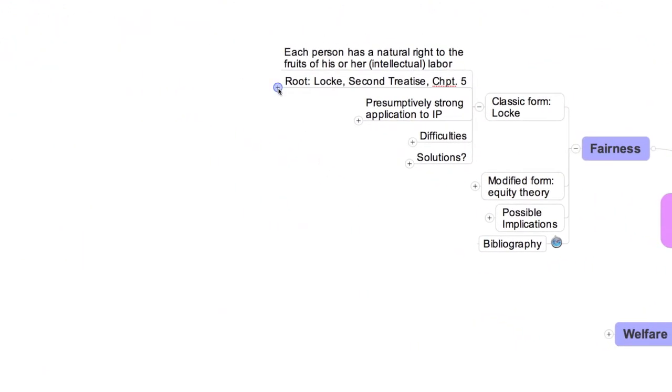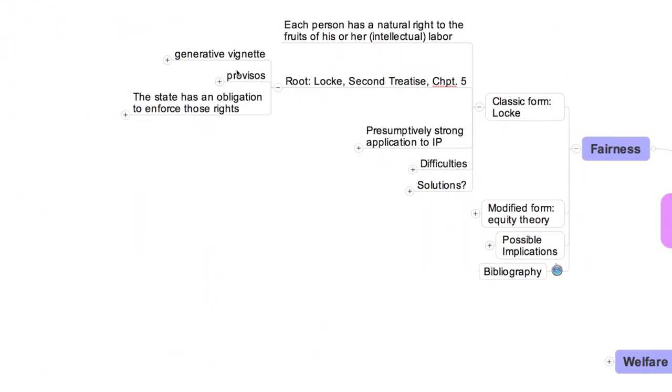In that story, a person – for Locke, that person is a man – comes upon a parcel of land that no one yet owns, or more precisely, that is held in common. The man works hard to make the land productive. How? Well, he doesn't say precisely, but you can imagine him removing the trees and the large rocks, breaking open the soil, ensuring that it's adequately irrigated, and so forth.